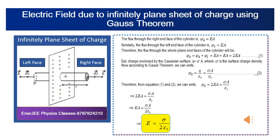In the right plane we consider point P, and in the left plane we consider point P'. The electric field is capital E. Since it is a plane sheet of charge, the cross-sectional area of the plane must be uniform and uniformly distributed along the infinite plane sheet. Therefore, at the left end and the right end, the cross-sectional area is the same, equal to A.